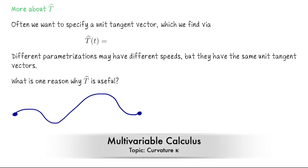In this lecture, we're going to define the notion of curvature along a smoothly parametrized curve R. Before we do that, I want to revisit the unit tangent vector t-hat.